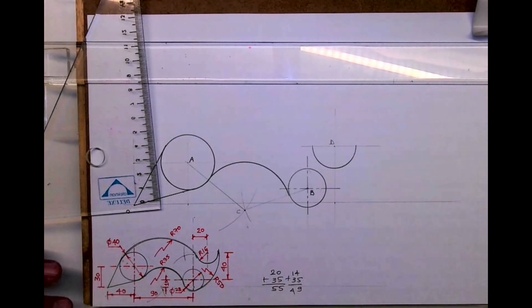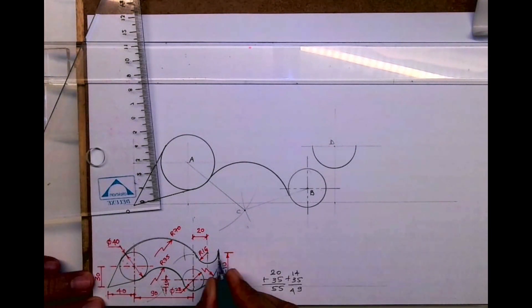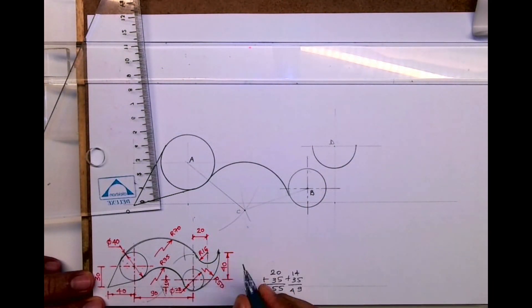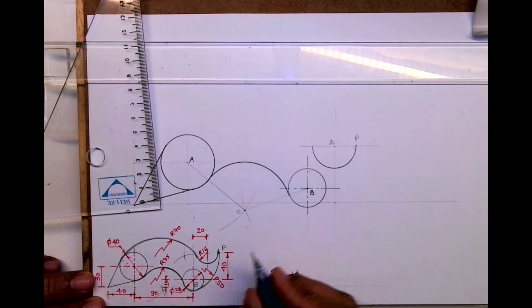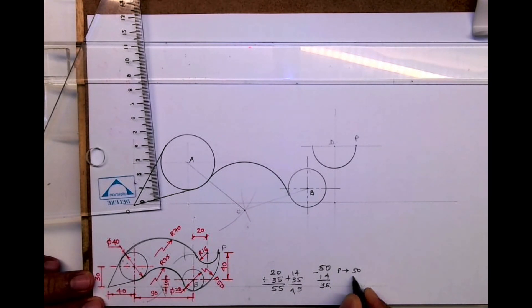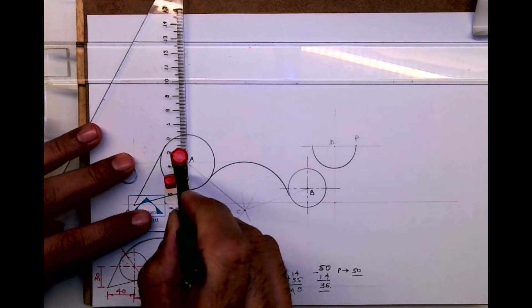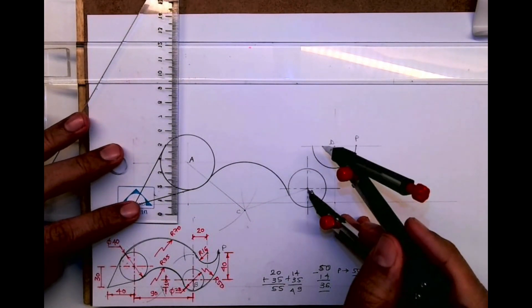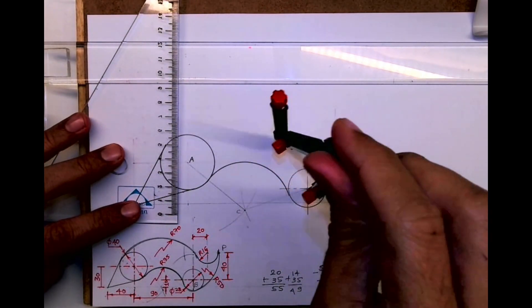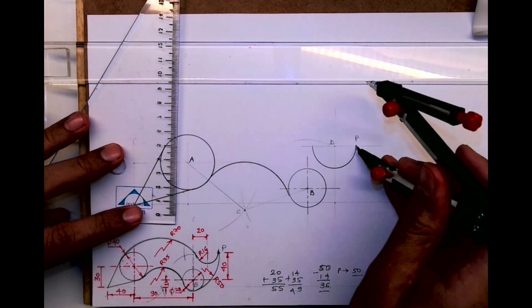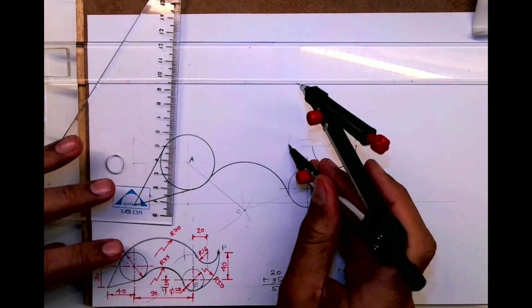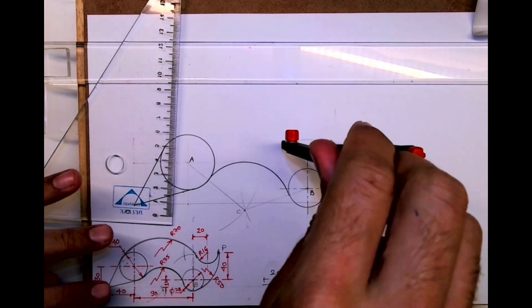Now we need to draw radius 50. So radius 50 is touching that point P. Let's say this is point P. From P we need to cut 50 and it is internal to this radius 14. So from B we need to cut 36, and from P we'll cut 50. Wherever they intersect, from that point you can take radius 50.